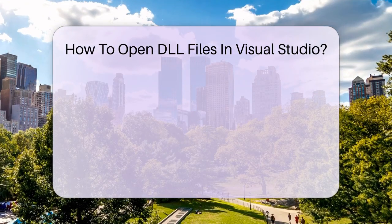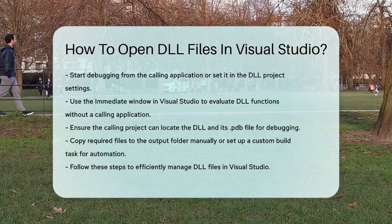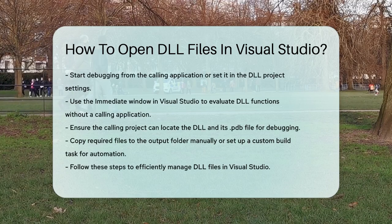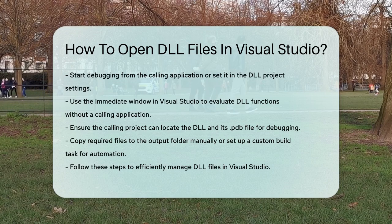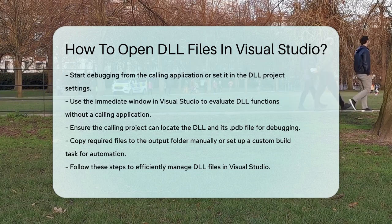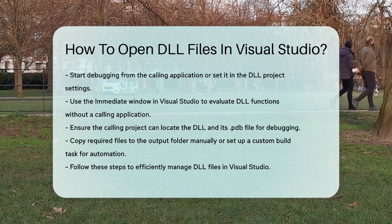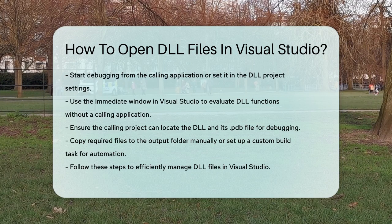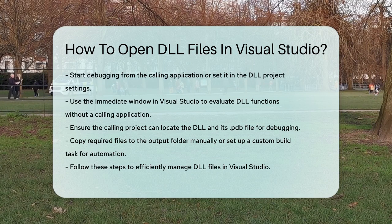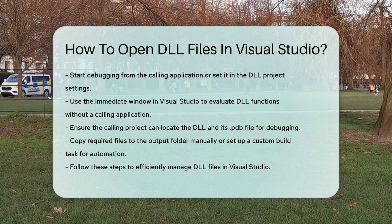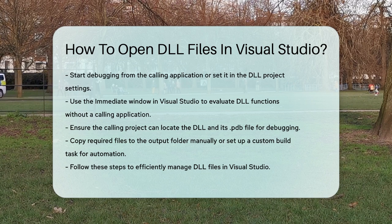You can also use the immediate window in Visual Studio to evaluate DLL functions without needing a calling application. To set up your project for debugging, ensure that the calling project can find the DLL, its .pdb file, and any other required files. You can copy these files to the output folder manually or create a custom build task to do it automatically.